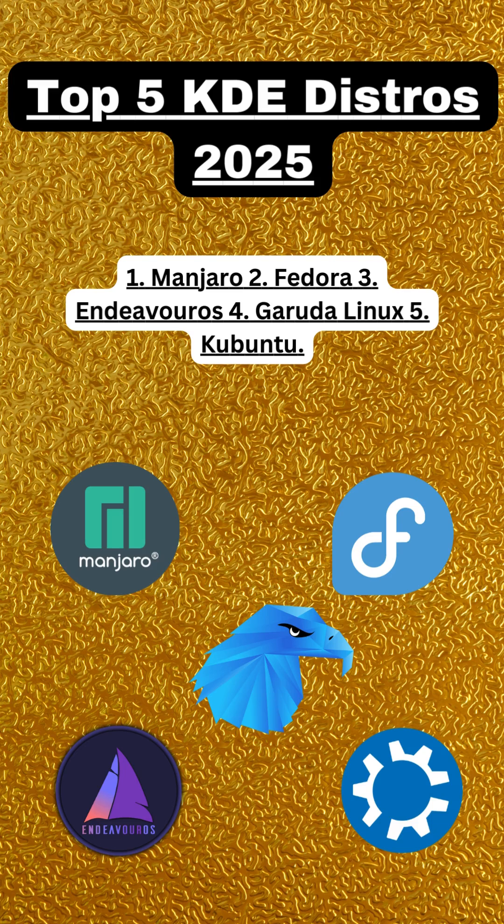2. Fedora KDE Spin — Fedora's KDE Spin delivers a pure and up-to-date KDE Plasma experience. As part of the Fedora project, it benefits from a strong commitment to open-source principles and cutting-edge technologies. This distribution is ideal for users seeking a balance between innovation and stability.